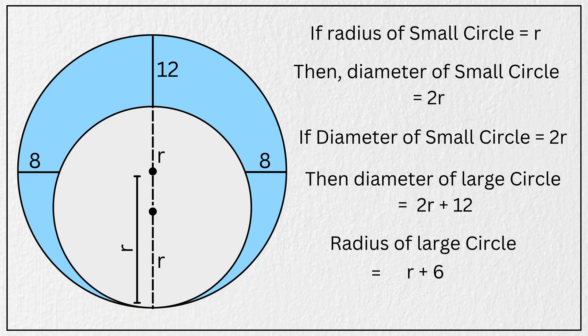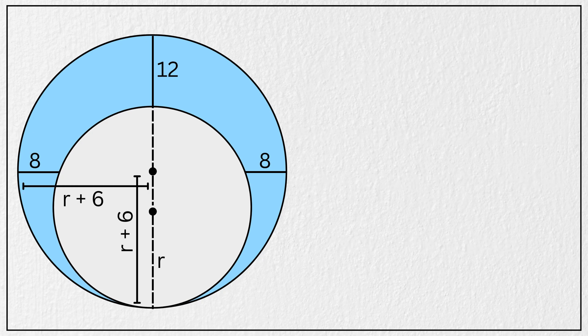So this length here is r plus 6 units, and this is also r plus 6 units, right? Now look carefully. If this full length is r plus 6 units, and this segment is r units, then this small part here must be 6 units. Similarly, if this full length is r plus 6,